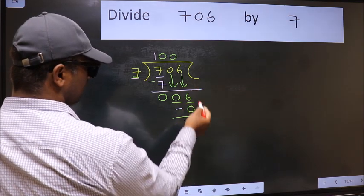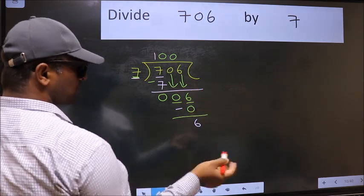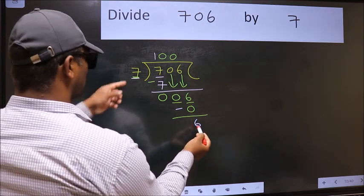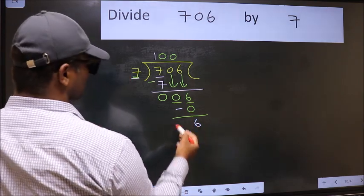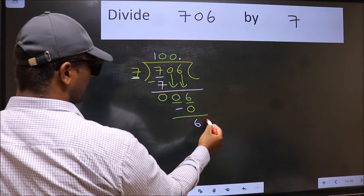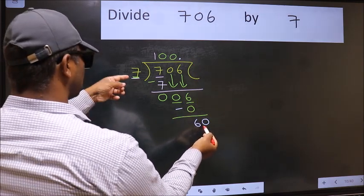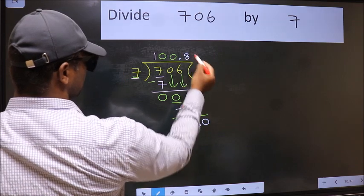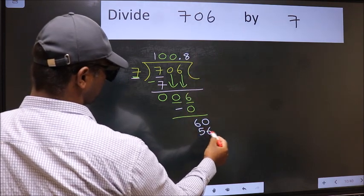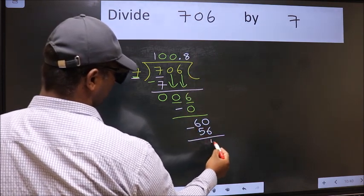Over here, we did not bring any number down. And 6 is smaller than 7. So now we can put dot and take 0. So 60. A number close to 60 in 7 table is 7, 8, 56. Now we should subtract. We get 4.